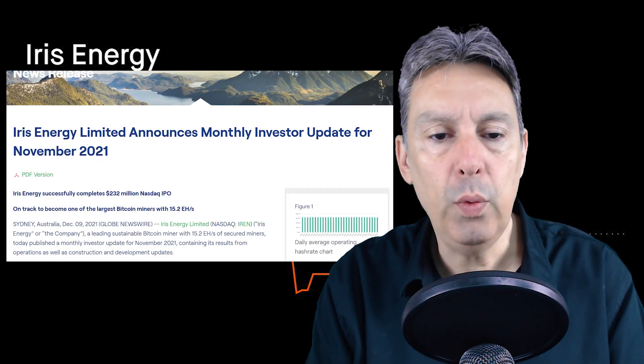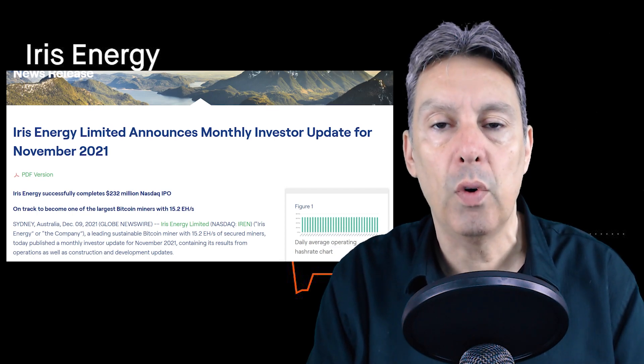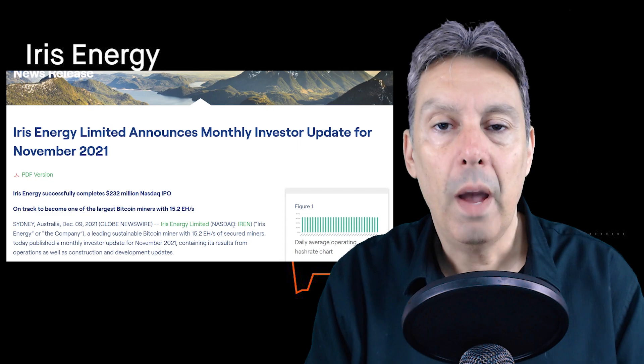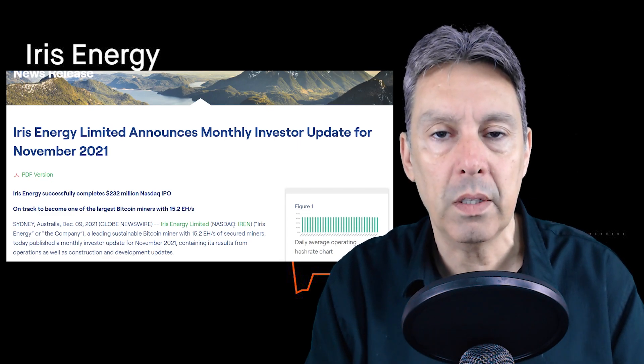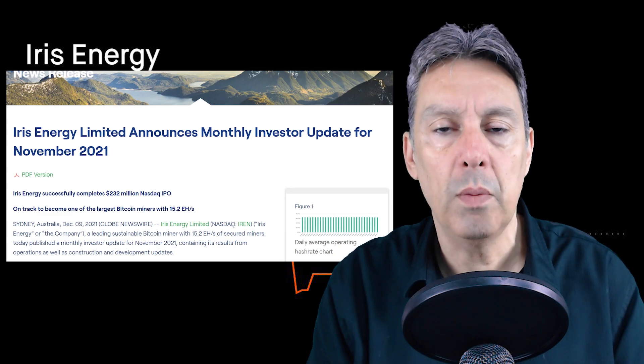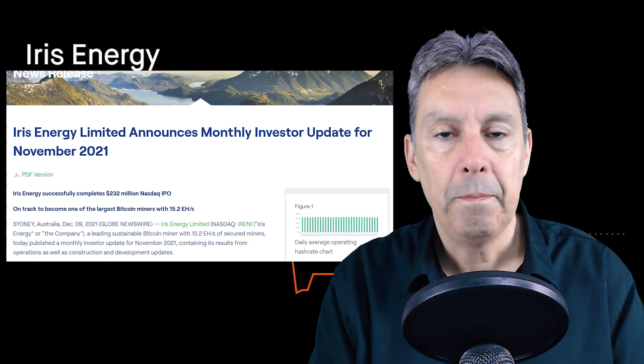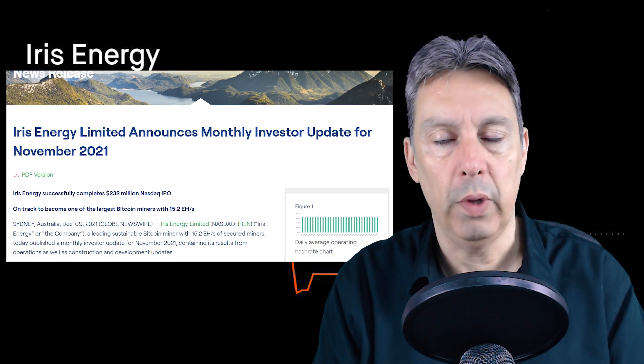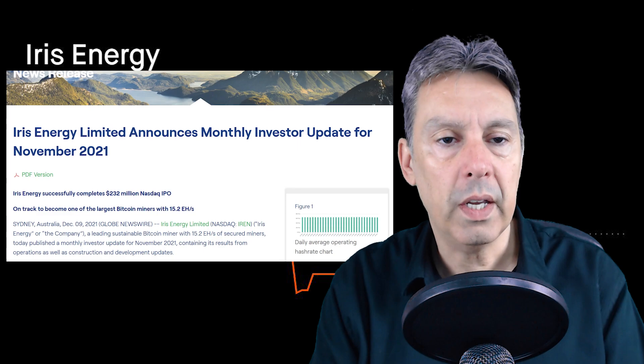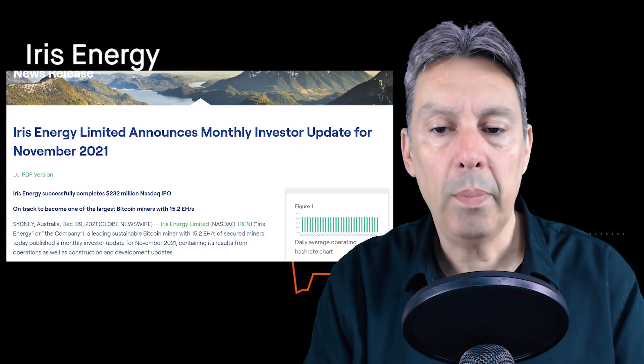The next press release was a few weeks later: Iris Energy Limited announces monthly investor update for November 2021. I'm actually encouraged to see this because the publicly traded bitcoin mining companies, the larger ones and the more established ones, have been getting into the habit of putting out a monthly update. That is extremely useful as an investor. So it looks like Iris has jumped right into this. They're not even two weeks into being public and they're already giving us a monthly update.